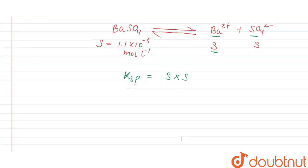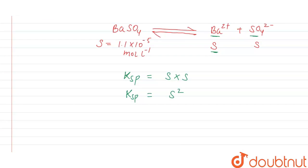So the Ksp of barium sulfate will be equal to S squared, and the value of S will be 1.1 × 10^-5 mole per liter, whole squared.